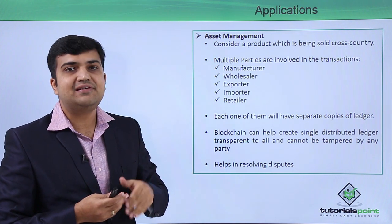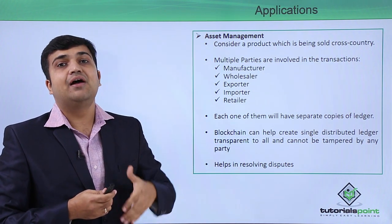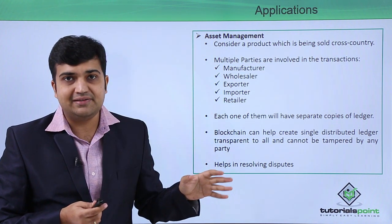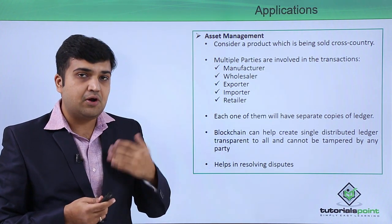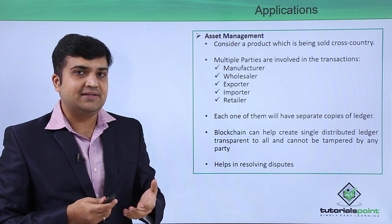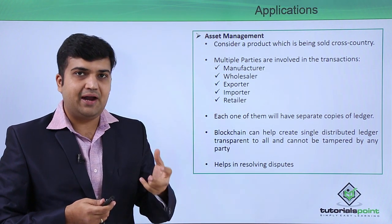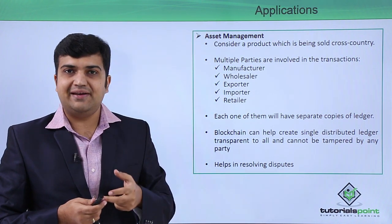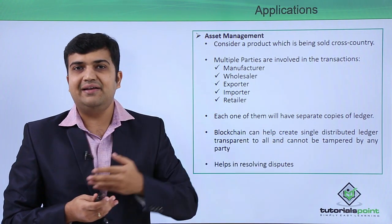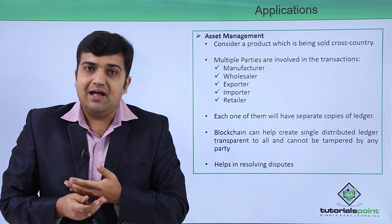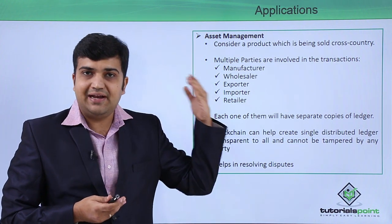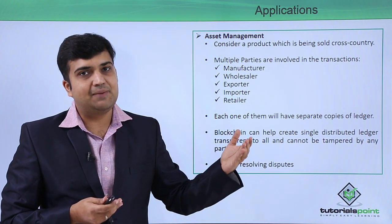If that happens, it can help to create a distributed ledger which is transparent to all the parties and cannot be tampered. Since it cannot be tampered, it creates a trust value amongst all the parties and entities and can also help resolve any disputes. For a given product, you can trace down an entire history of the transaction and an entire history of where the product has been throughout its entire life cycle.